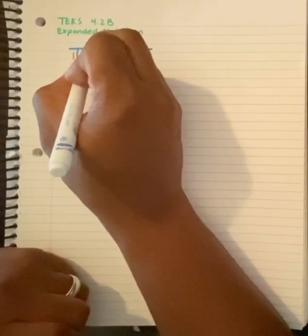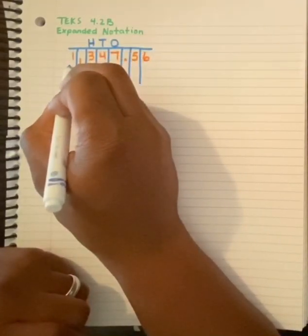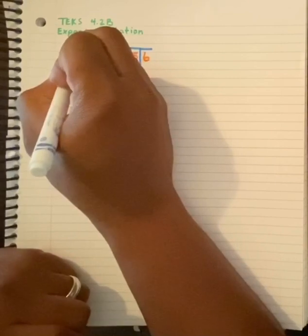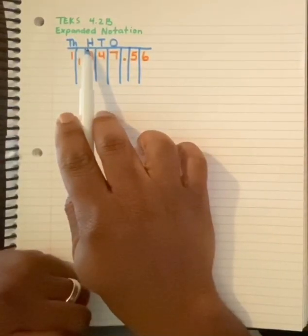Hundreds, so capital H. And this comma lets me know that the next place value is the thousands, which is a capital T, lowercase h. Ones, tens, hundreds, thousands.